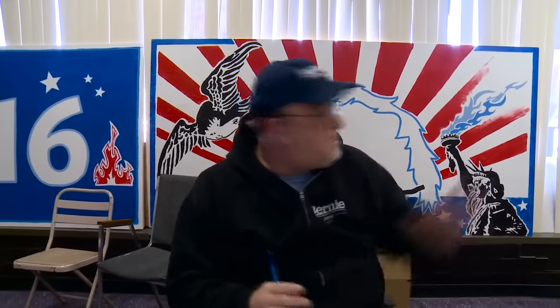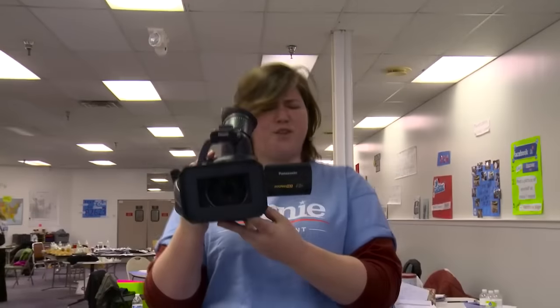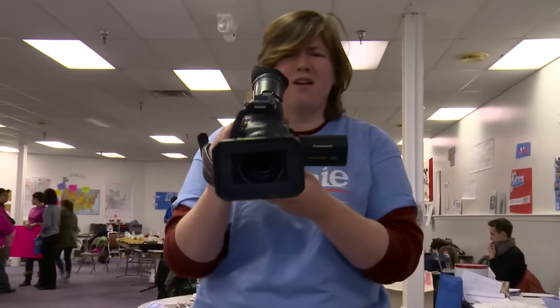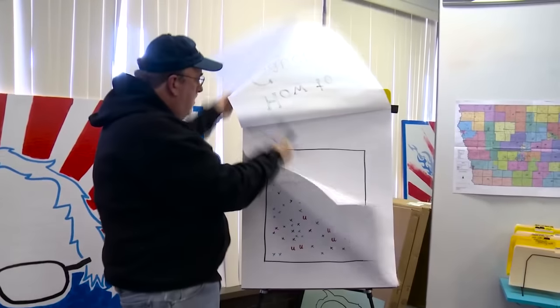Pete, our caucus expert, will take it from here. This is a really tight race, so you want to know about caucuses. Iowa is broken up into 1,681 individual precincts. Each precinct has a caucus — it's a community meeting. Your precinct caucus location should be in your neighborhood. If you're going to be 18 by election day and you're an Iowan, you can caucus.